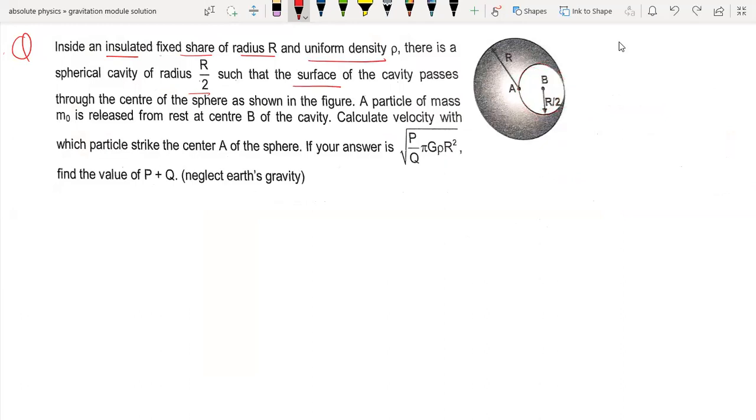A particle of mass M0 is released from rest at center B of the cavity. Calculate the velocity with which the particle strikes the center A of the sphere.